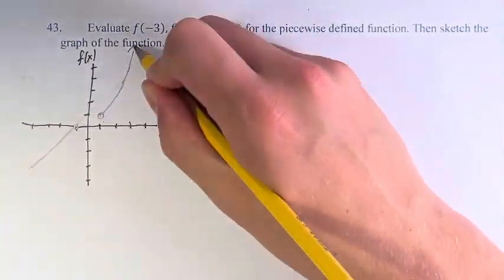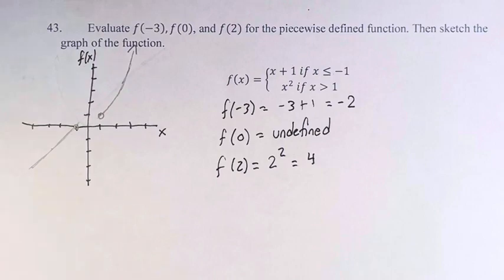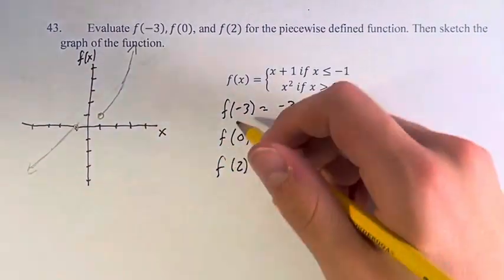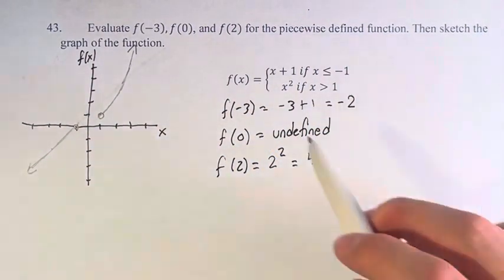And then it is continuous for the rest of the positive points. So this is the graph of the function, and these are the given values for the function f of x.